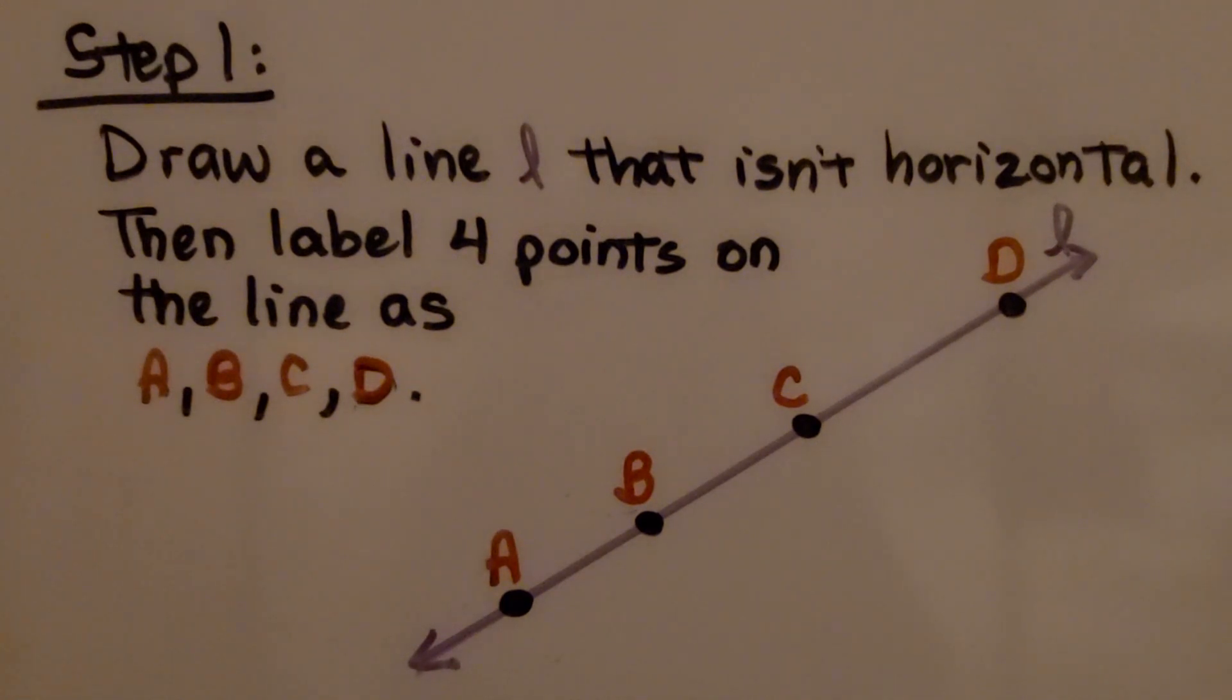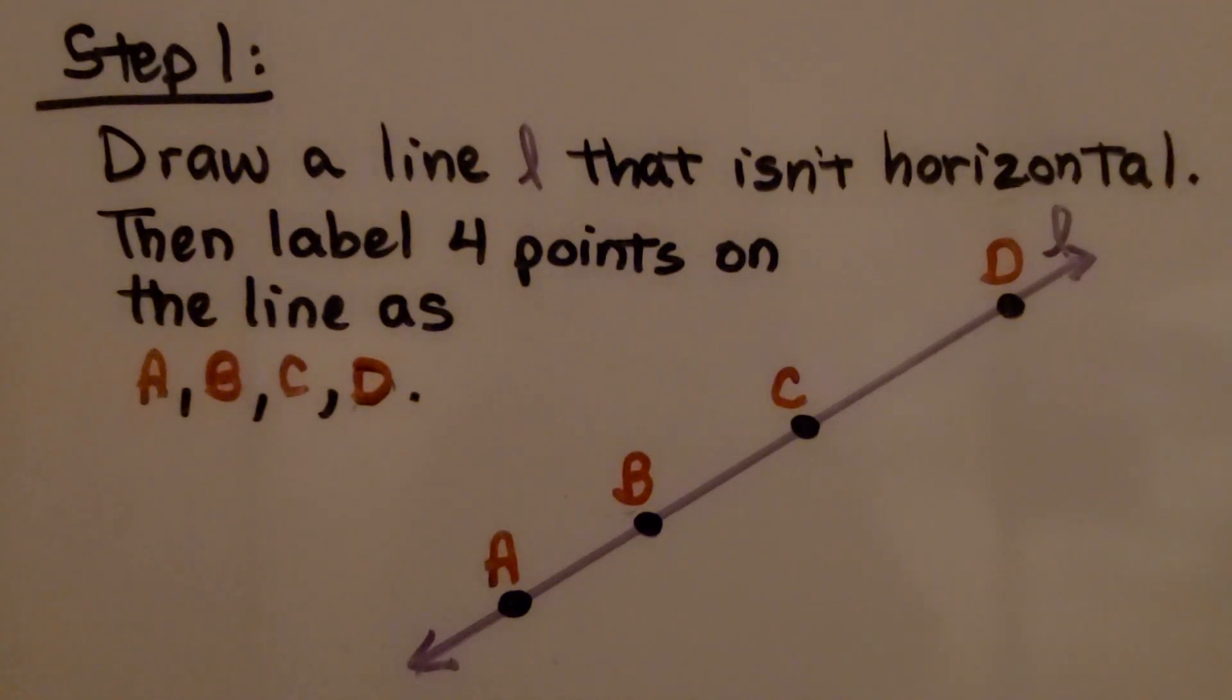In step one, we're going to draw a line L that isn't horizontal. It's not horizontal, so we want it to be on a slant. Then label four points on the line as A, B, C, D.